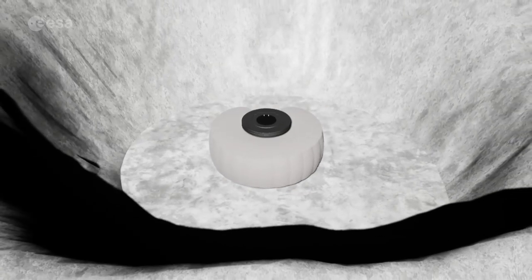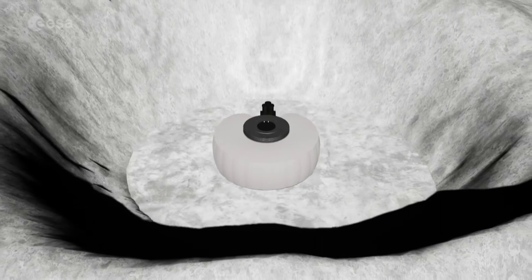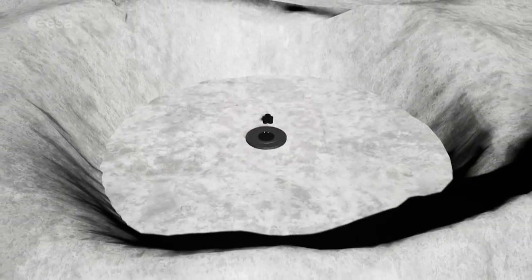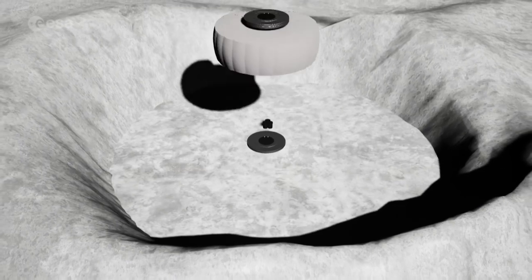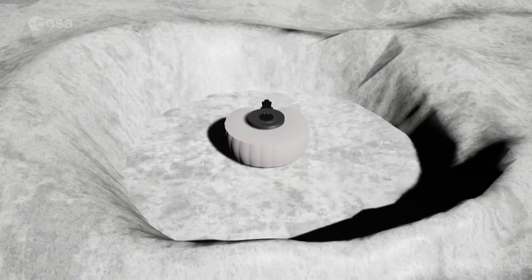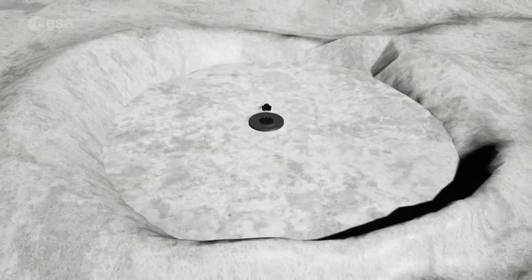The next modules are sealed to the previous ones, inflated, and again covered in lunar dust. Embedding the structure in regolith shields the astronauts from harmful solar and cosmic radiation and provides thermal insulation, protecting the astronauts from the extreme temperatures found on the Moon.